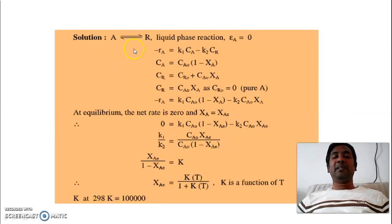Solution. Now let us discuss step by step what is the solution of this problem. A is reversibly giving R. So epsilon_A is 0, that is the fractional change in volume is 0, as both are 1-1 mole.